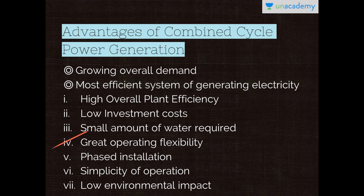Great operating flexibility: the steam cycle makes it possible to start up and shut down the plants quickly, which also affects efficiency positively, reducing startup losses. Phased installation: because gas turbines can go into operation much sooner than the steam plant, installation in stages is possible. The gas turbine plant can keep generating power as the steam plant is under construction, making it possible to adjust to the growth in demand for energy in a grid.